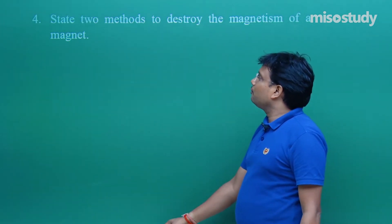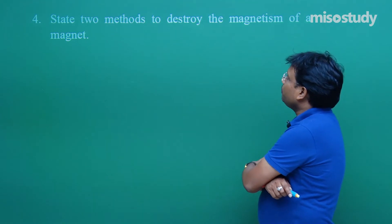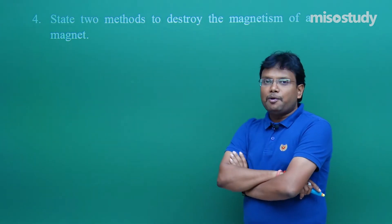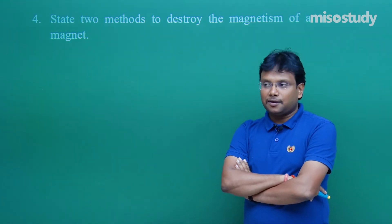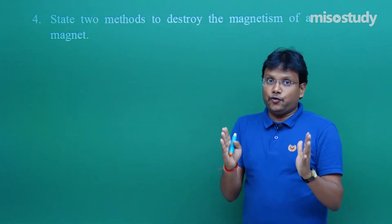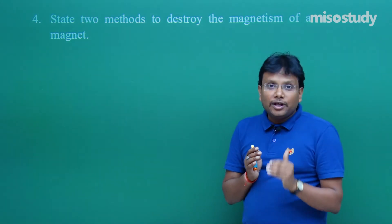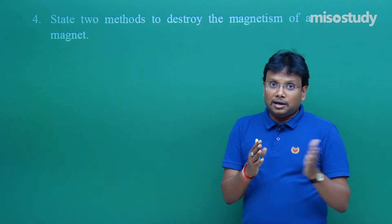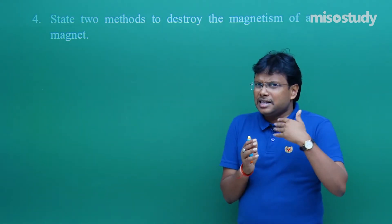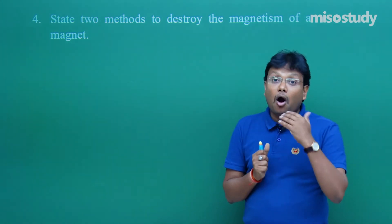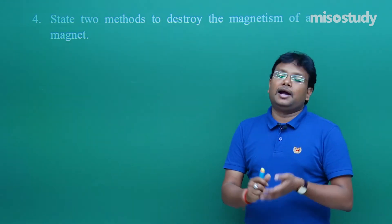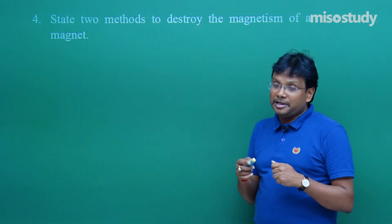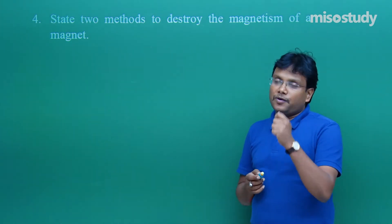State two methods to destroy the magnetism of a magnet. These types of questions are asked just to check how seriously and carefully you have gone through the chapter — whether you studied it superficially or devoted some time to understand the details. This question is purely theoretical, checking your way of reading and understanding.